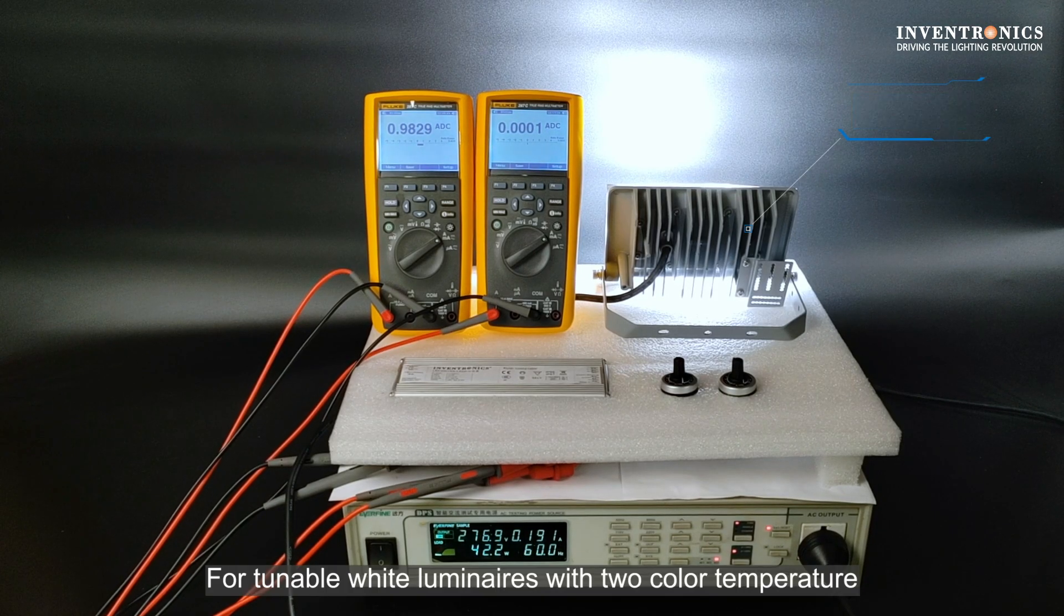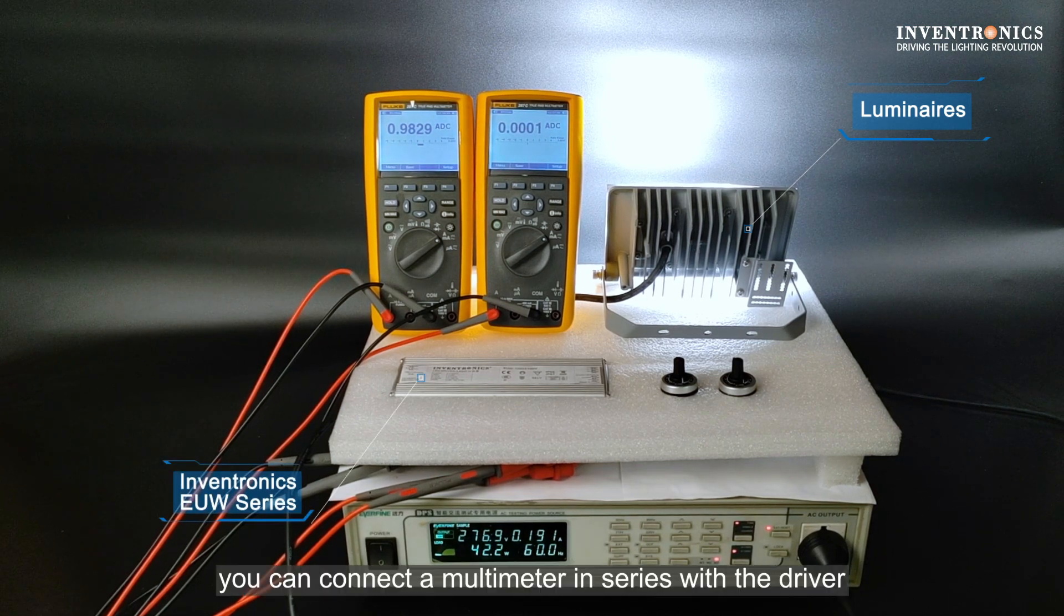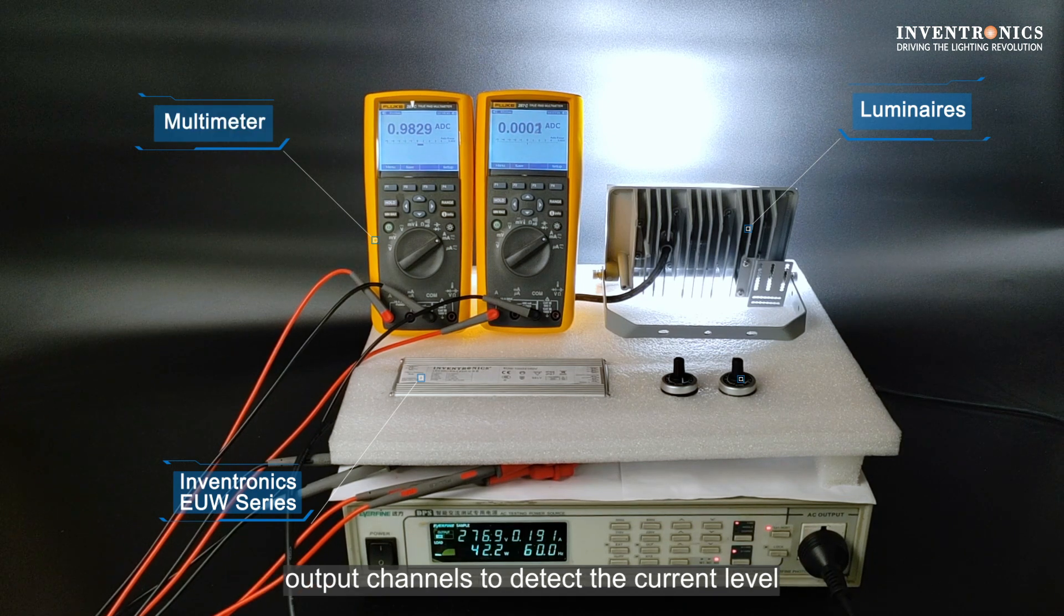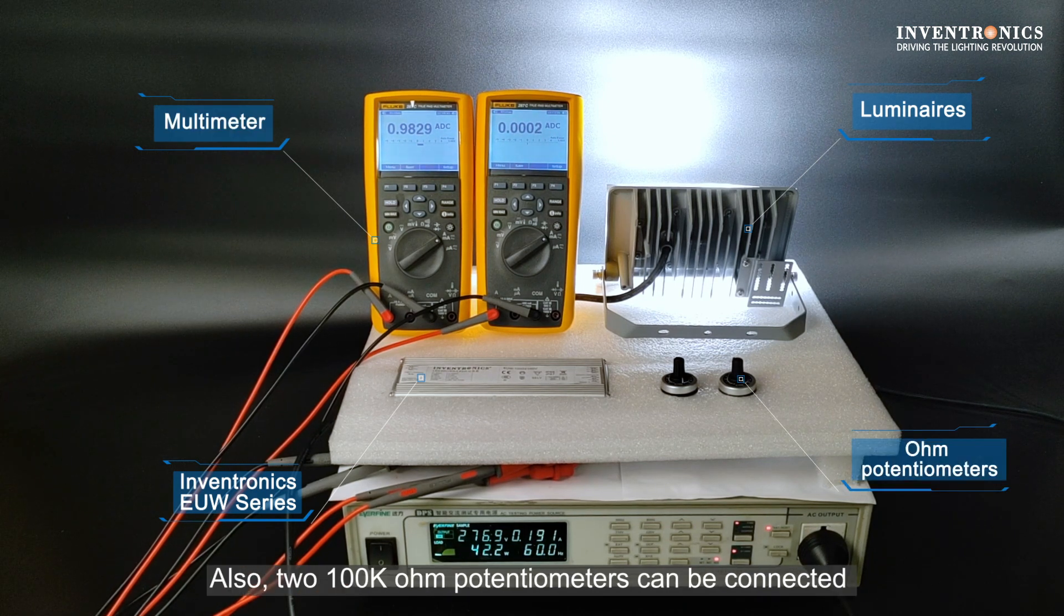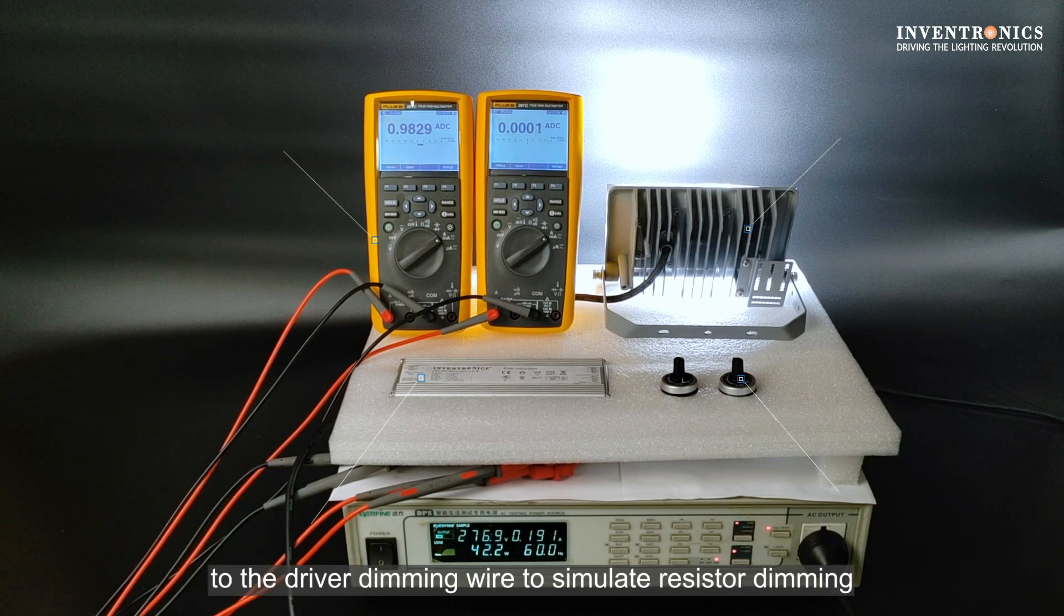For tunable white luminaires with two color temperature channels of 3000k and 6000k, you can connect a multimeter in series with the driver output channels to detect the current level. Also, two 100k ohm potentiometers can be connected to the driver dimming wire to simulate resistor dimming.